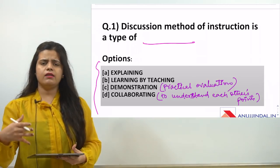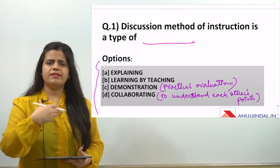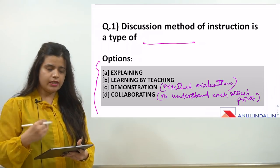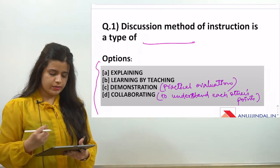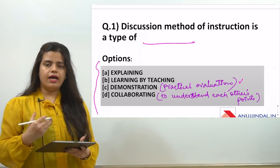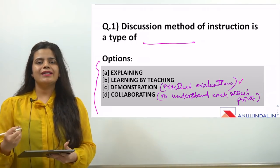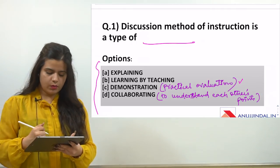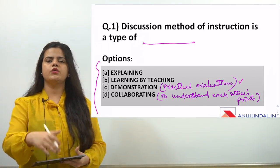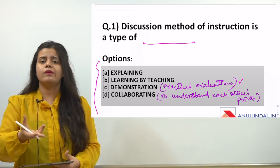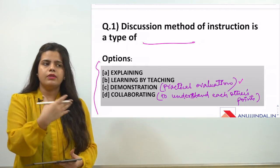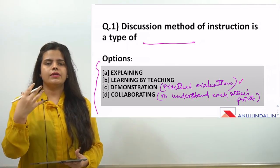The first option is explaining — when you explain or define something. The second is learning by teaching — learning through teaching. The third is demonstration — practical evaluation, when you evaluate something practically. The fourth is collaborating — understanding each other's points. When we talk to a colleague, classmate, or friend, we try to understand their points besides our own.